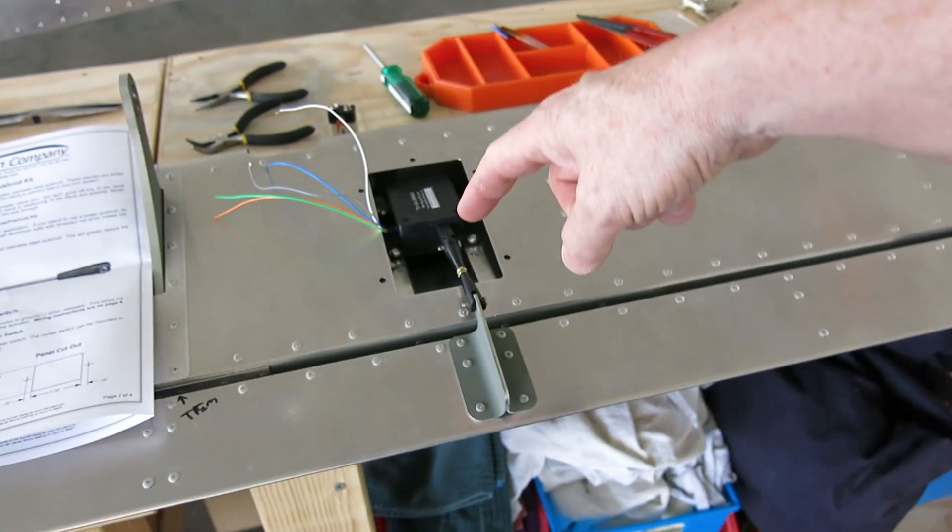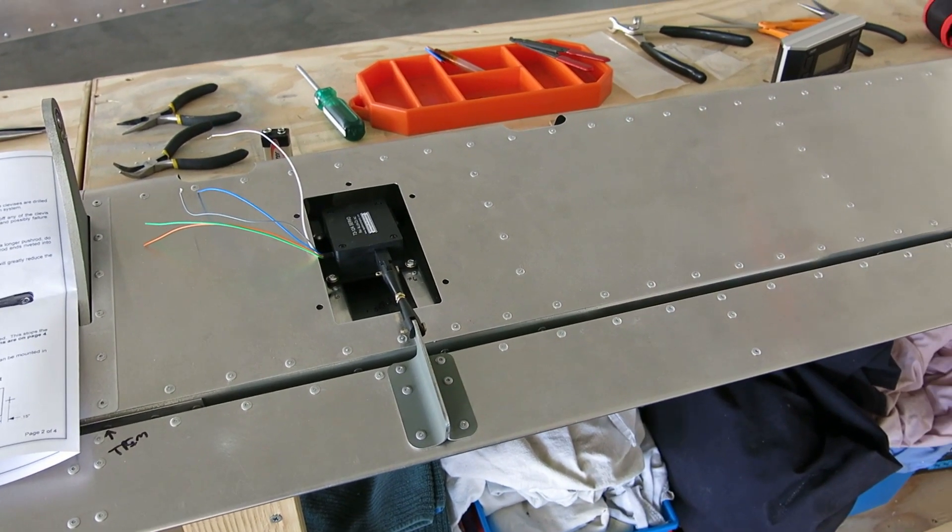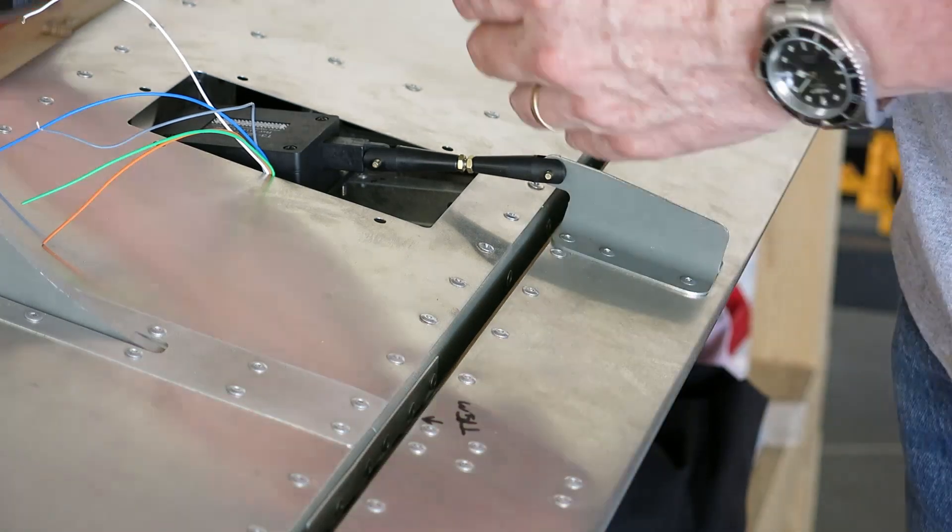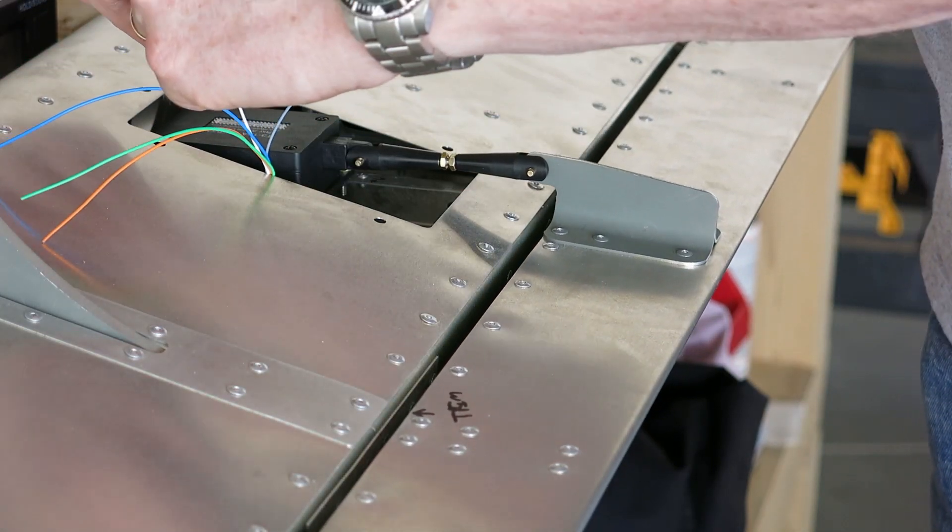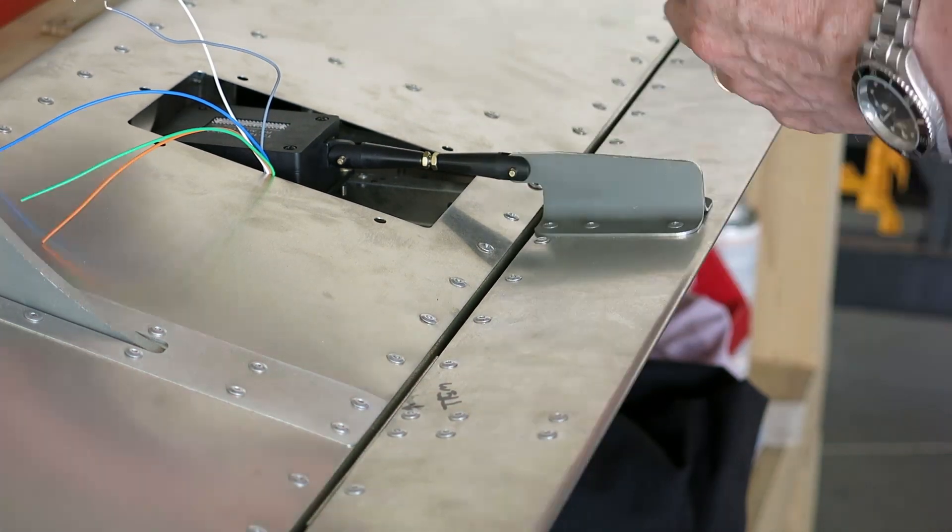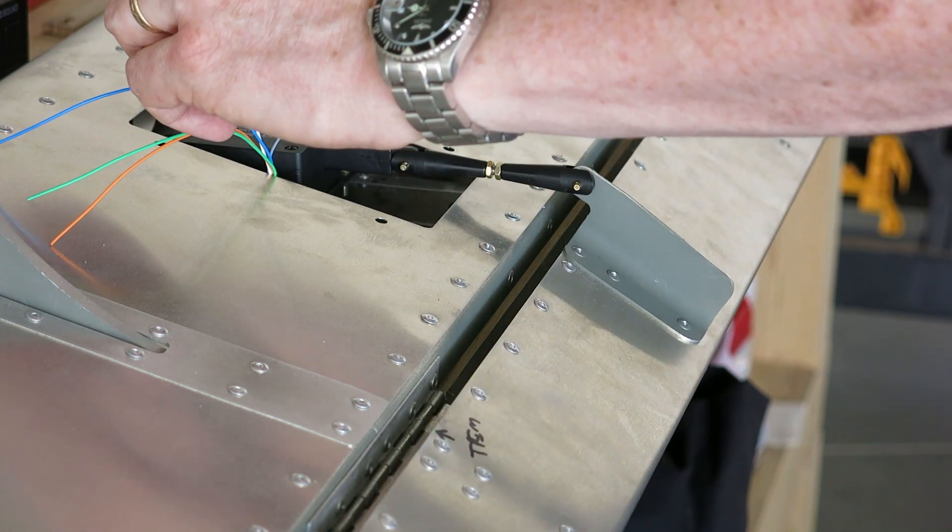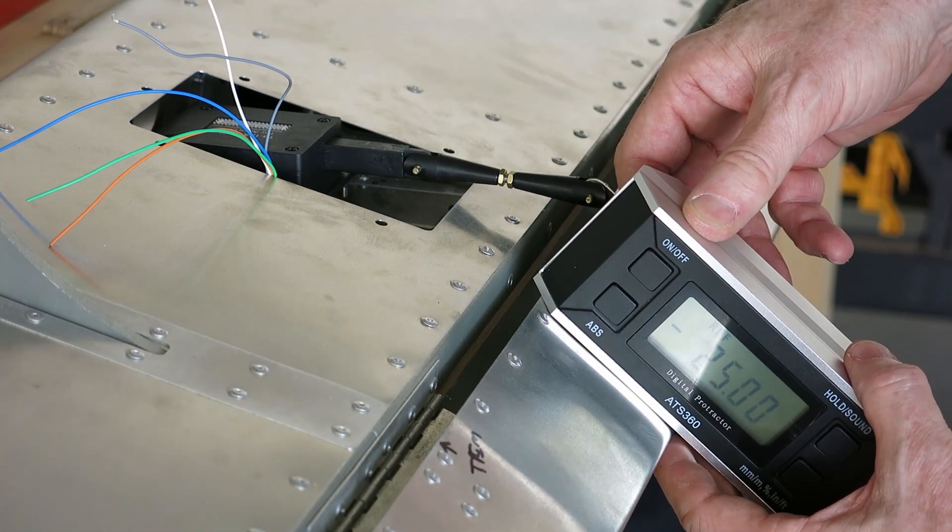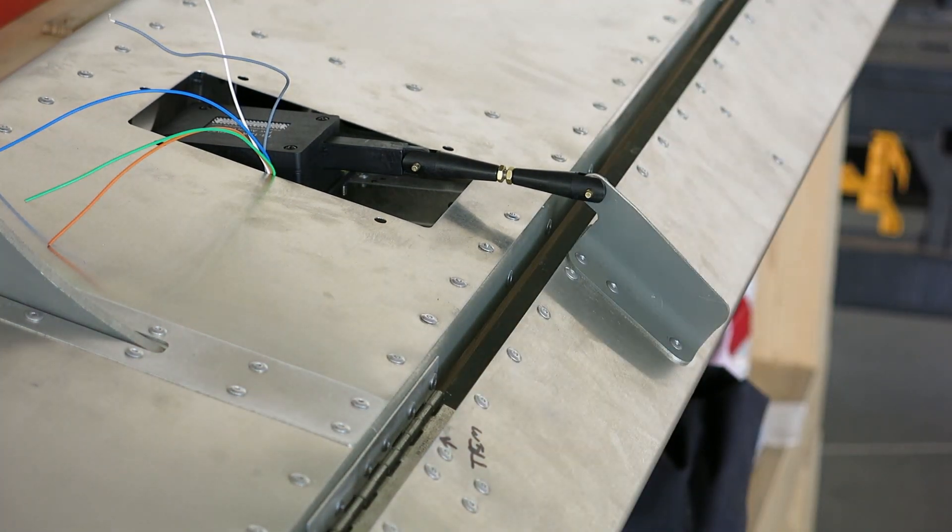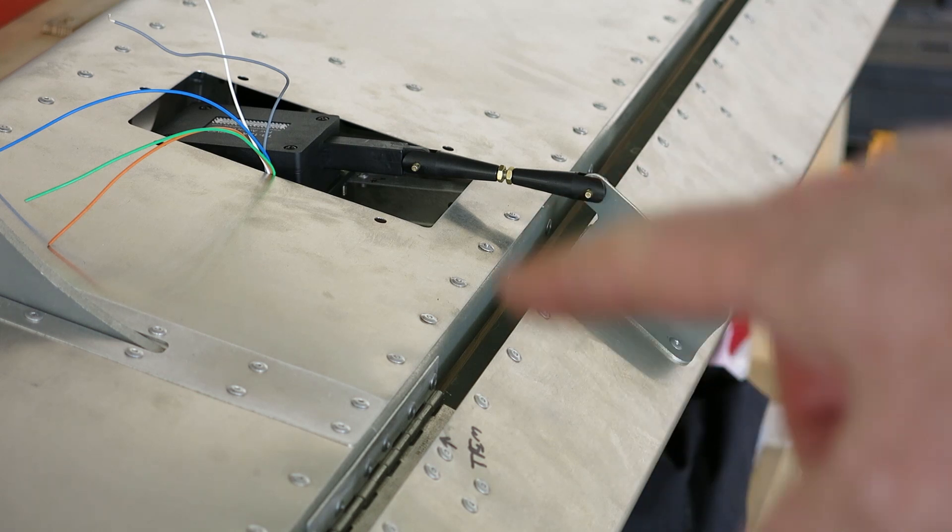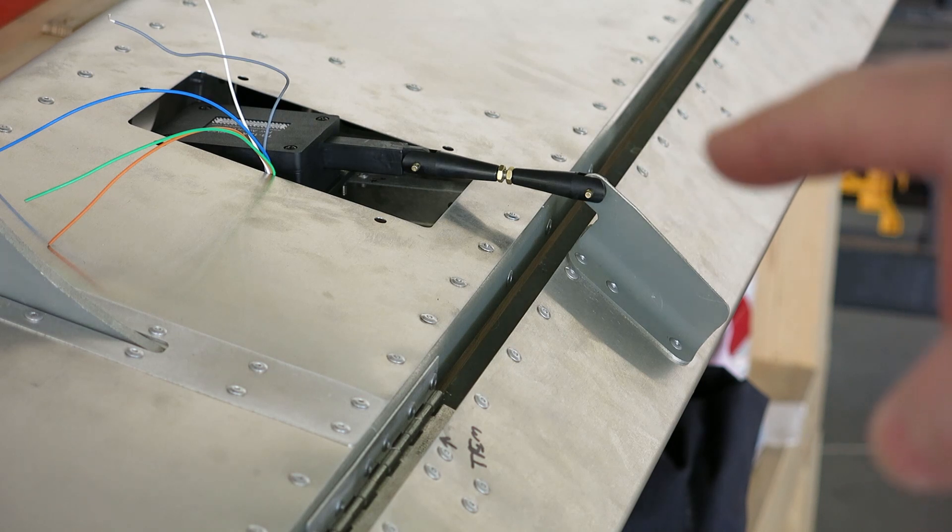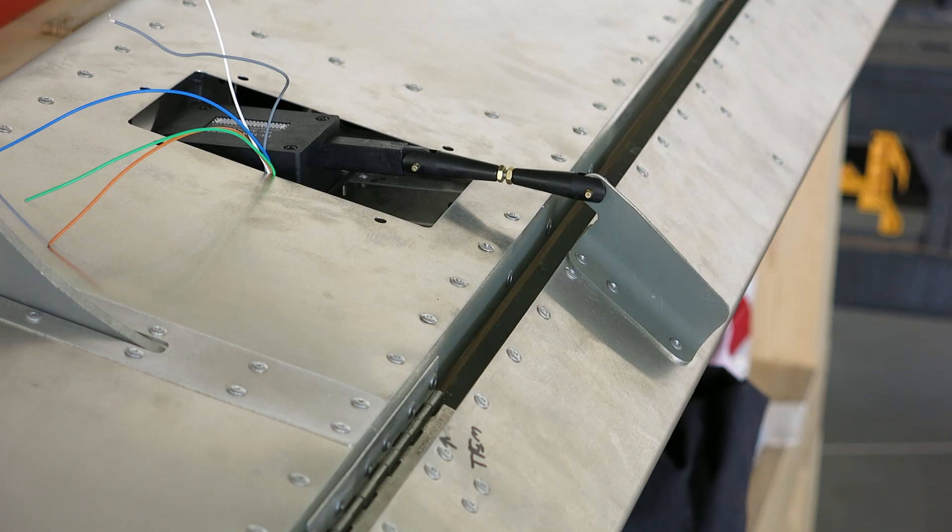Now I'm just going to verify. I'm going to run this all the way out, all the way in, and measure the angle on the trim tab to make sure that's correct. Okay, we are 21 degrees down at max travel and 25 degrees max up travel. The tolerance on this is plus or minus three degrees, so we're right on. We're plus one degree, so we're okay there.